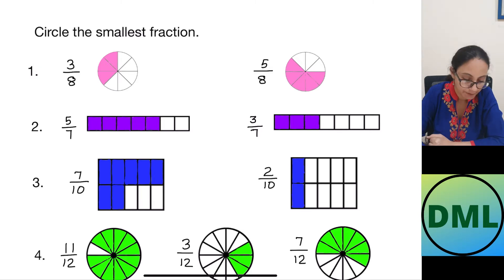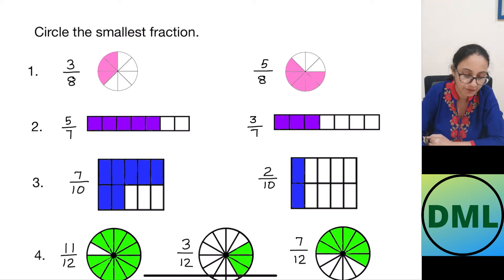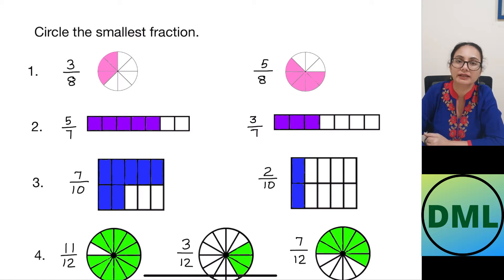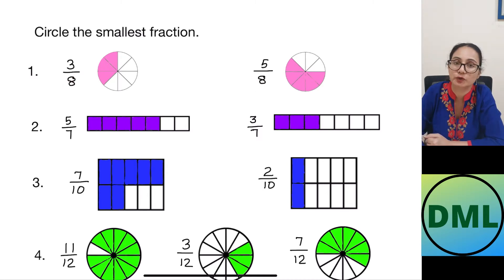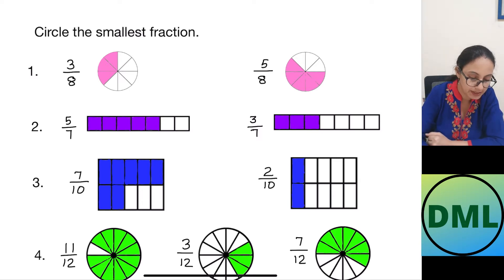Let's see the first example. It is 3 by 8 — out of 8 parts, 3 parts are shaded. And here, out of 8 parts, 5 parts are shaded. Now I have to show which is the smallest fraction. The smallest fraction means the smallest number in the numerator, but for that the denominator should be the same. It is 8 and 8 — so we look at the numerator. 3 is smaller than 5, so 3 by 8 is my smallest fraction.